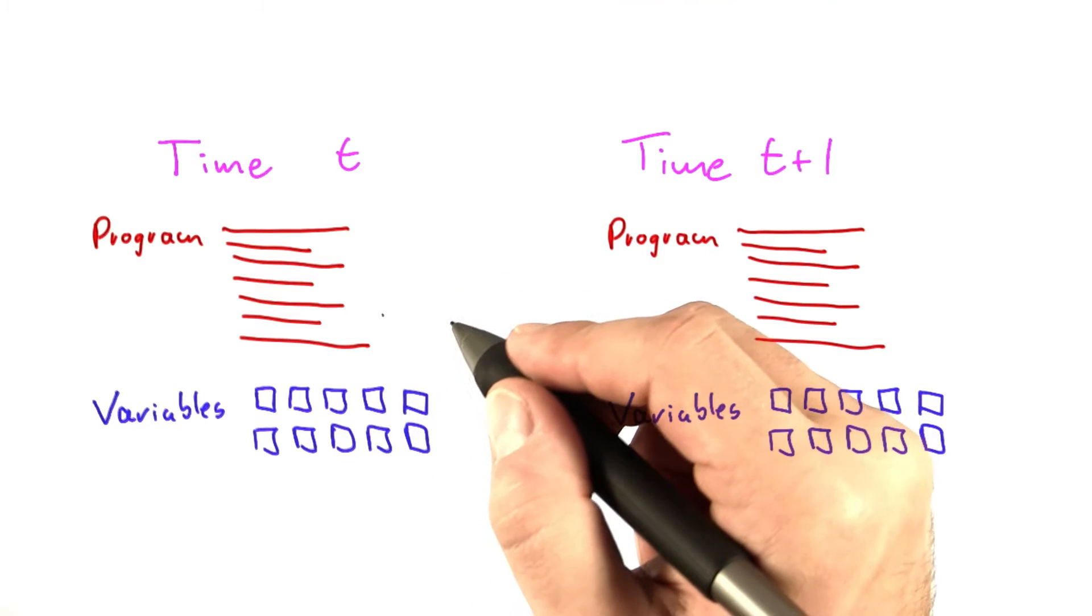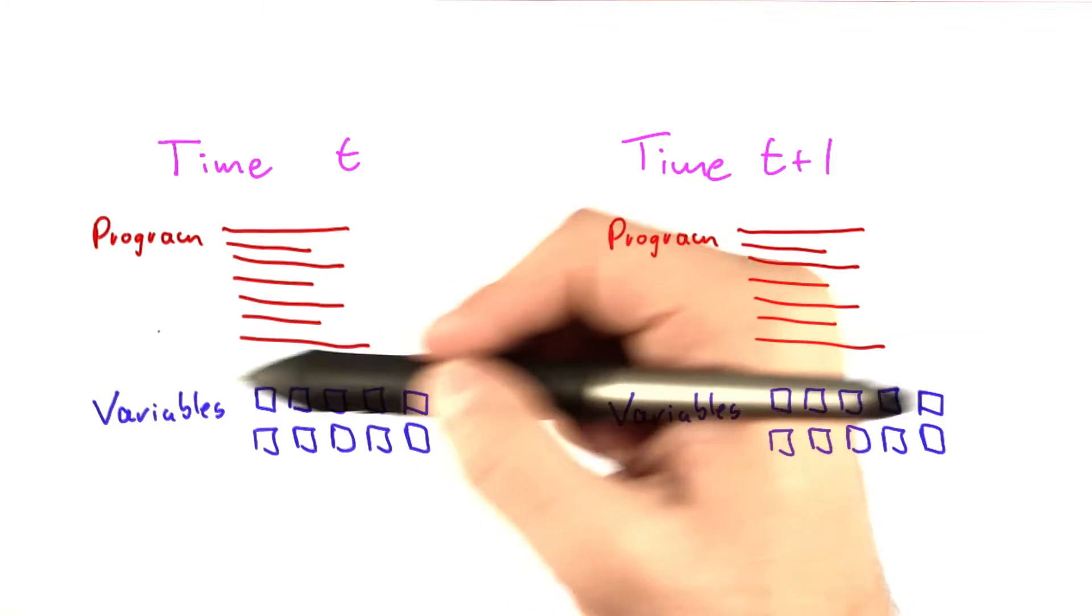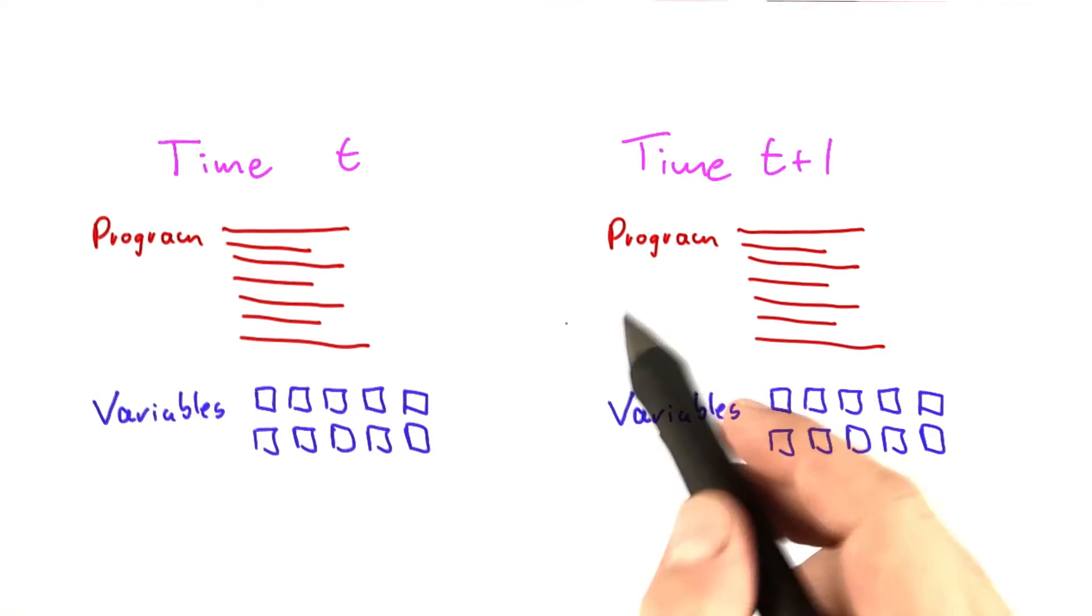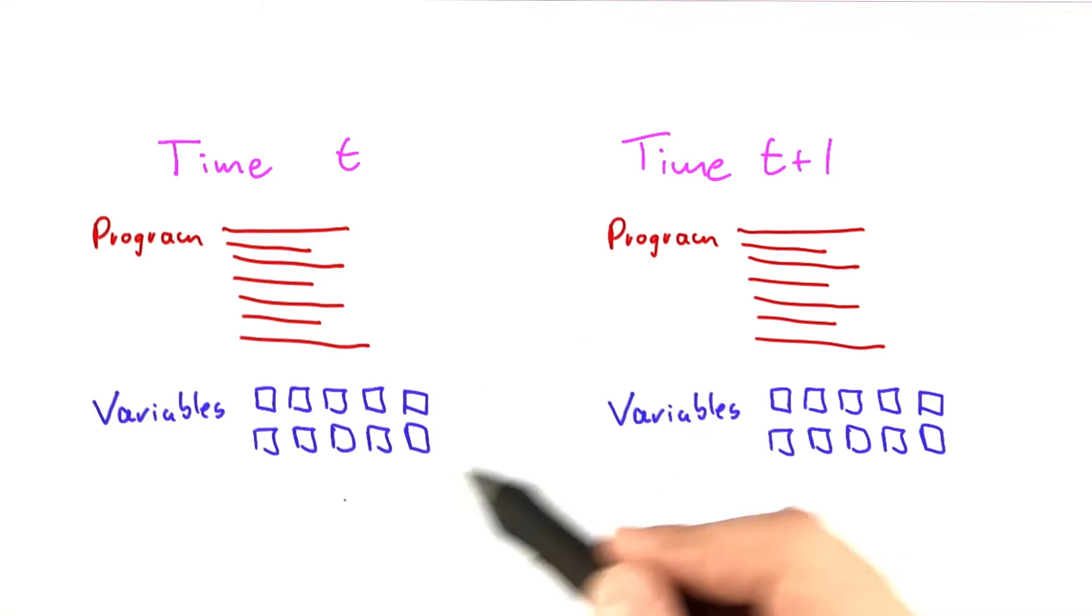Now we're almost there. What I would like you to do now is think about when you analyze an algorithm using pen and paper, how would you go about that? What you basically say is you have your program here and your variables here.